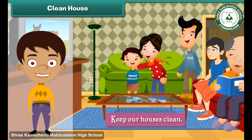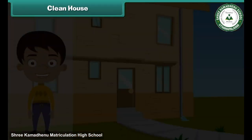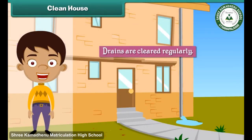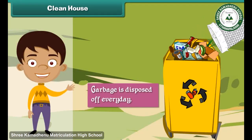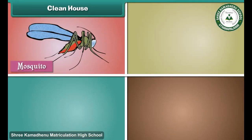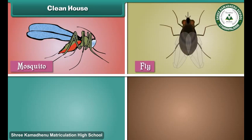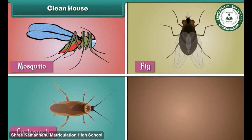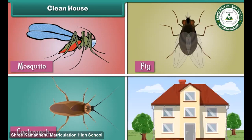We must keep our houses clean if we want to lead happy and healthy lives. We can do so by ensuring that drains are cleared regularly, garbage is disposed of every day, and insects such as mosquitoes, flies, cockroaches etc. do not breed in and around the house.